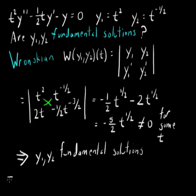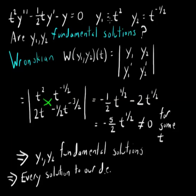Or, decoding that just a little bit, what does that imply? Every solution to our DE can be written in the form of a linear combination of these two.